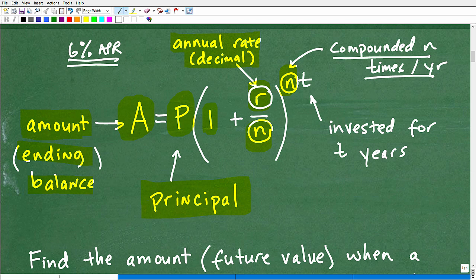T is how many years that investment, our principal investment, is being invested in. If something was invested for 10 years, T would be 10. That is basically the compound interest formula.